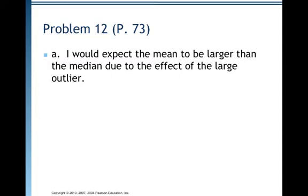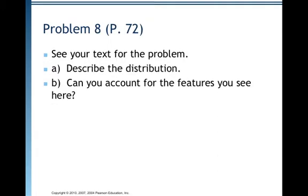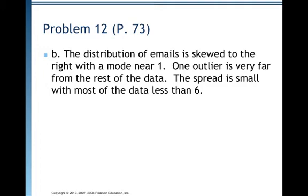Part B asks: write a few sentences describing the distribution — shape, center, spread, and unusual features. The distribution of emails is skewed to the right because the tail extends out to the right, with a mode near one — remember, the mode is your peak. One outlier is very far from the rest of the data. The spread is small with most of the data less than six. For part C, I would choose the median and the IQR because the distribution is skewed.